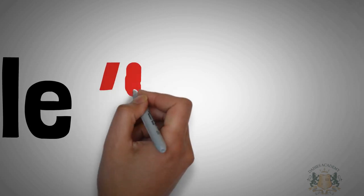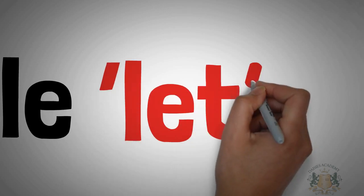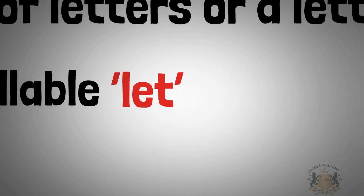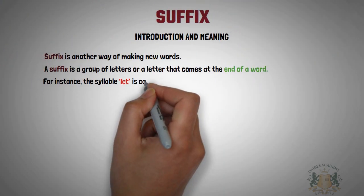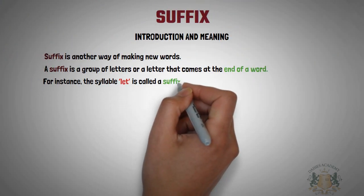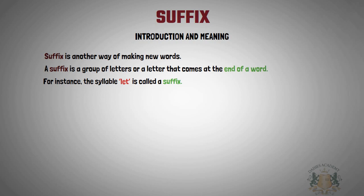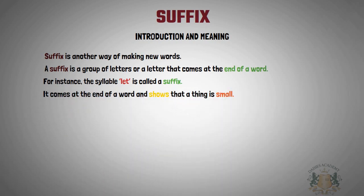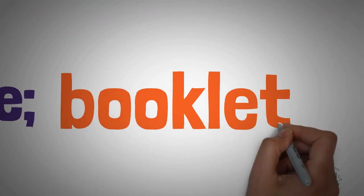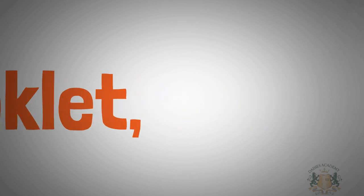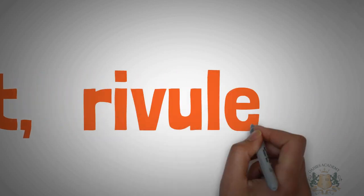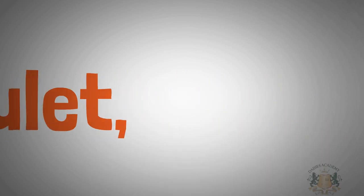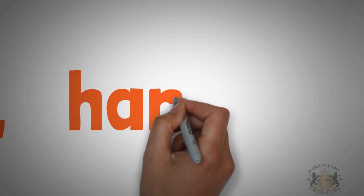For instance, the syllable '-let' (L-E-T) is a suffix. It comes at the end of a word and shows that a thing is small. For example, we have 'booklet' — that's a small book — 'rivulet', 'hamlet', etc.